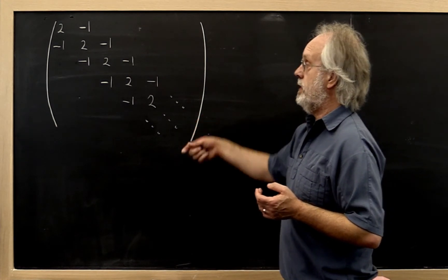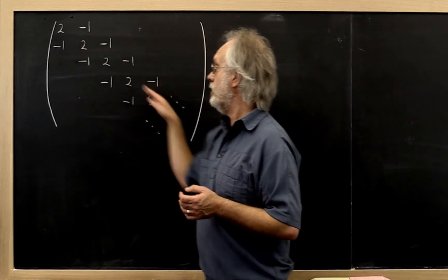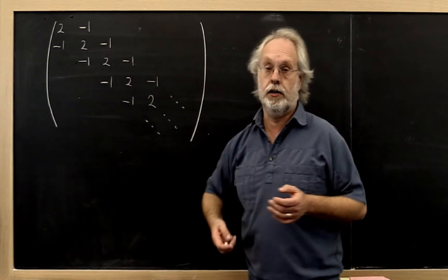What's a tridiagonal matrix? It's a matrix where you only have the diagonal, the subdiagonal, and the superdiagonal.